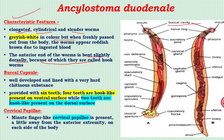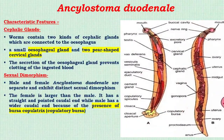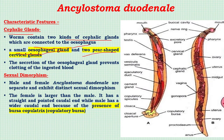The buccal capsule is provided with six teeth: four hook-like teeth on the ventral surface and two knob-like teeth on the dorsal surface. Cervical papillae are minute finger-like structures present a little away from the anterior extremity. These parasites are also provided with two types of cephalic glands connected to the esophagus: small esophageal glands and two pear-shaped cervical glands, as seen in the diagram.